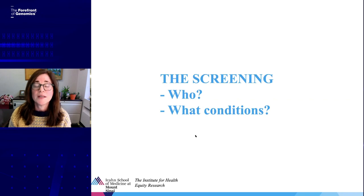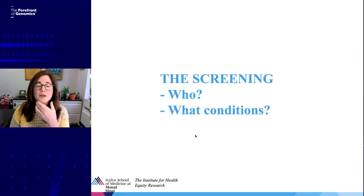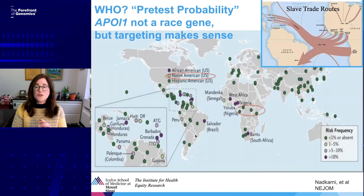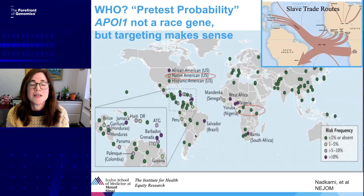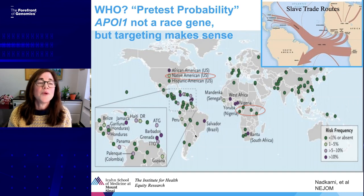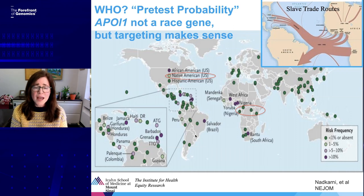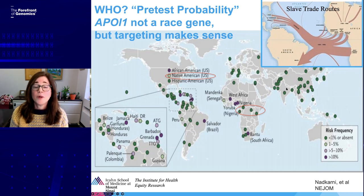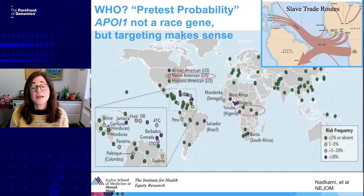Who do we screen for APOL1 and for what conditions — what's ready for prime time, and what research do we need? We need to think about who to screen while APOL1 is not a race gene. A map by Gersh Natkarni and colleagues shows that in some parts of the world like Europe there's not a lot of APOL1, while in West Africa — where we think the gene variants began — it's very common. We also need to soberly look at the slave trade routes: APOL1 positivity follows them, going to Salvador in Brazil and up through the Caribbean to North America. We use this in our work when engaging people about APOL1 screening — if you have any African ancestry, or consider yourself Black or African American.